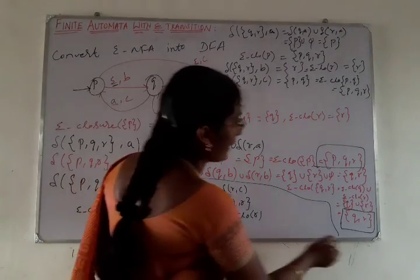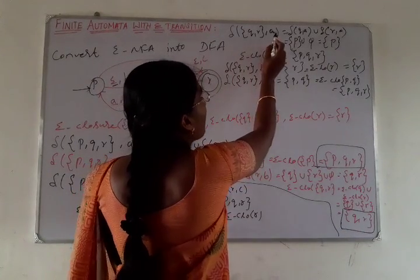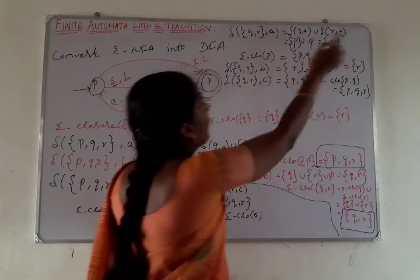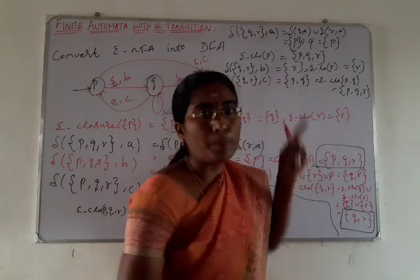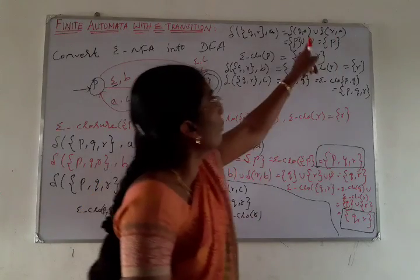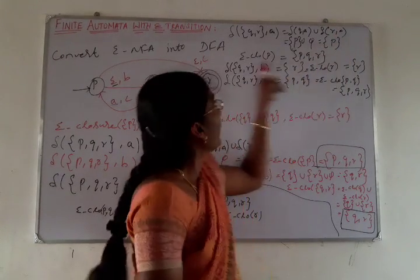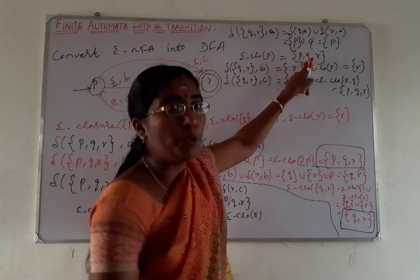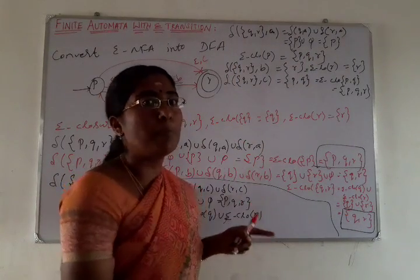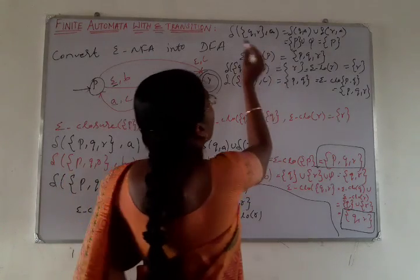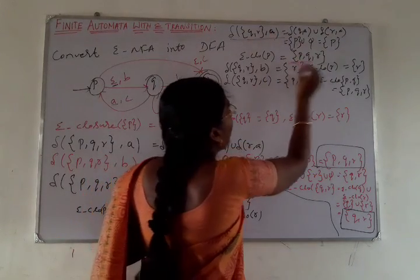Now we extend the new state QR. QR is the only new state. For input symbol A: δ(Q, A) union δ(R, A) = P union ∅ = P. Then we take the epsilon closure of P, which equals {P, Q, R}. So the transition from state QR on input A goes to state PQR.